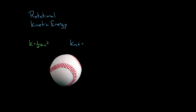For objects that are rotating, the rotational equivalent of mass is moment of inertia. So I might guess that instead of mass, I'd have moment of inertia - because in Newton's second law for rotation, there's a moment of inertia instead of mass. And instead of speed squared, since I have something rotating, I'd have angular speed squared. It turns out this works.